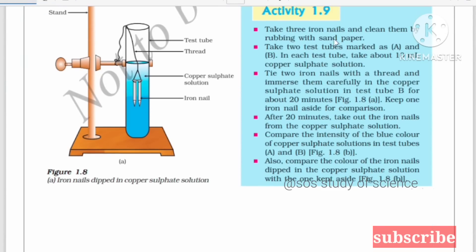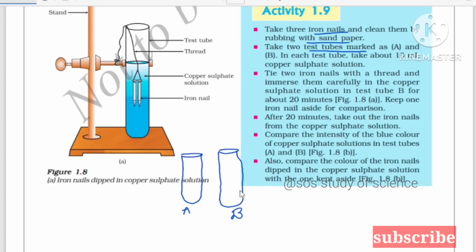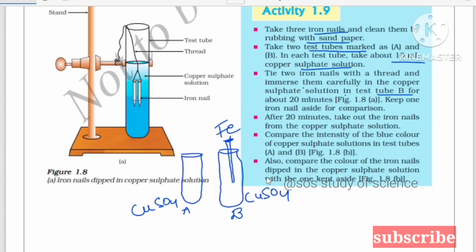Activity 1.9: Take an iron nail and clean it by rubbing with sandpaper, because iron also reacts with oxygen present in the air. Take two test tubes marked A and B. In each test tube, take 10 ml of copper sulfate solution. In test tube B, tie the iron nail with thread and immerse it carefully in the copper sulfate solution. Observe the change in the color of the solution after 20 minutes.